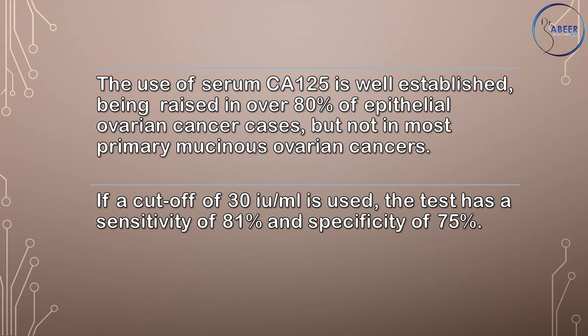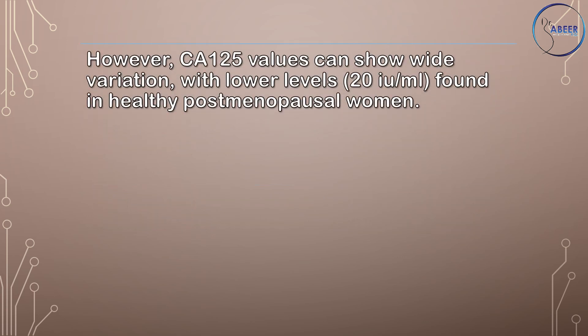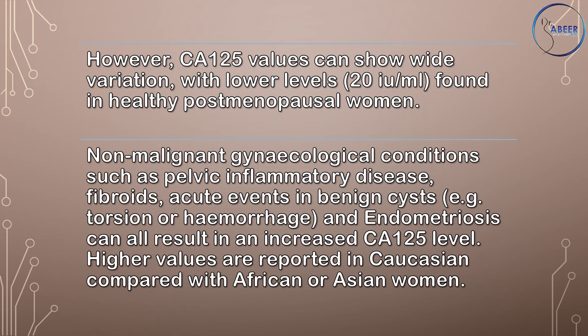The use of serum CA-125 is well established, being raised in over 80% of epithelial ovarian cancer cases, but not in most primary mucinous ovarian cancers. If a cutoff of 30 international units per ml is used, the test has a sensitivity of 81% and a specificity of 75%. However, CA-125 values can show wide variation, with lower levels equivalent to 20 international units per ml found in healthy postmenopausal women. Non-malignant gynecological conditions such as pelvic inflammatory disease, fibroids, acute events in benign cysts (for example torsion or hemorrhage), and endometriosis can all result in an increased CA-125 level.